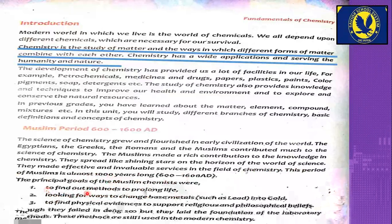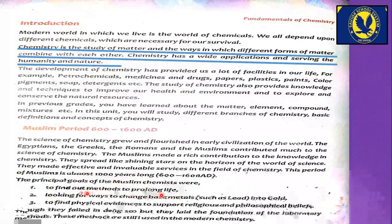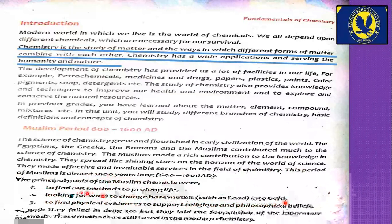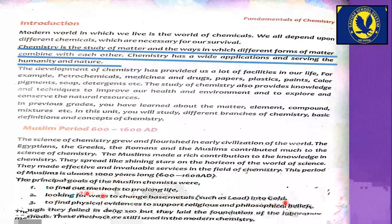The Muslim chemists wanted to prolong human life through medicine — studying herbs, minerals, and natural substances and their effects on human health. Their second goal was looking for ways to change base metals such as lead into gold. This was called alchemy, and many chemists spent a great deal of time on this pursuit, as it would be like finding a key to a treasure.